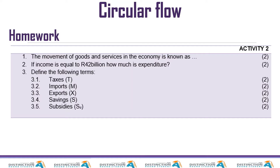The first question was: the movement of goods and services in the economy is known as — obviously this is a real flow because these are tangible, different from money flow. The next one: if income is equal to 42 billion, how much is expenditure? Remember that income is always equal to expenditure and equal to production, so the answer is 42 billion. Even if they ask for production, the answer would still be 42 billion because they are always equal.